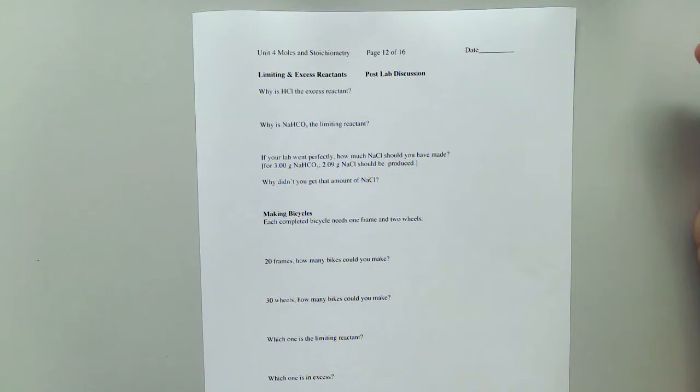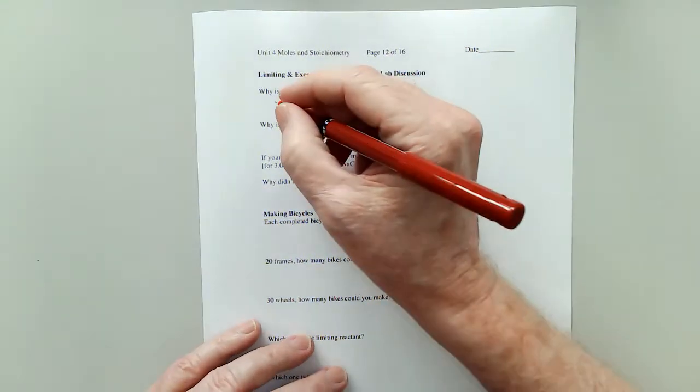You mixed it, it bubbled, you added more, it bubbled more. And you kept adding the HCl drop by drop until the solution quit bubbling. And what that told you, that it had stopped bubbling, was that the hydrochloric acid was the excess reactant.